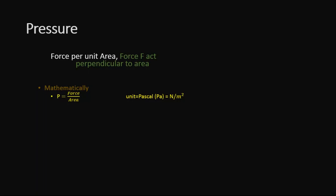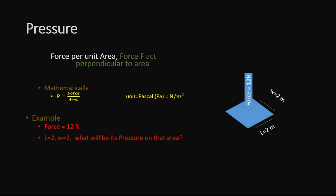Pascal is equal to Newton per meter square. For example, if we have a 12 Newton force acting on a surface with length equal to 2 meters and width equal to 2 meters, what will be the pressure due to the applied force?